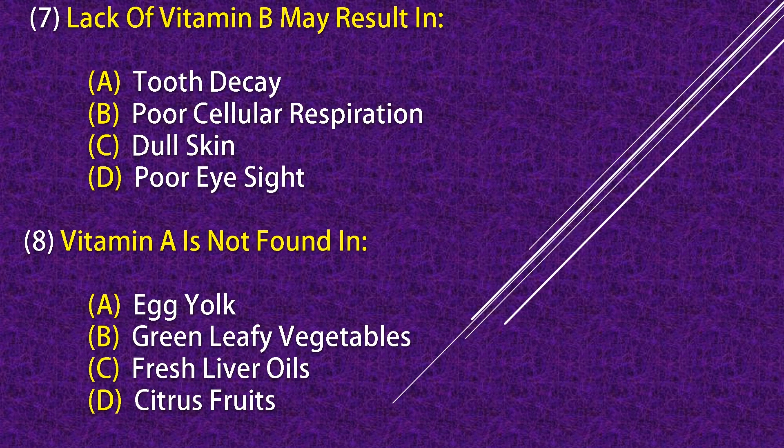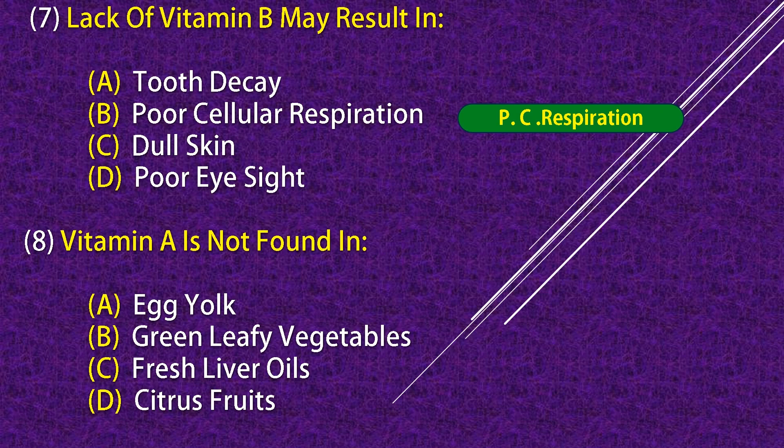Lack of Vitamin B may result in poor cellular respiration. Vitamin A is not found in citrus fruits.